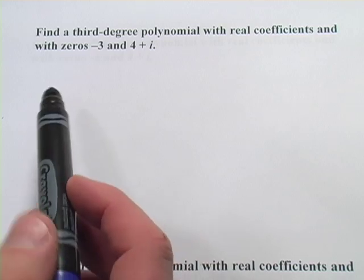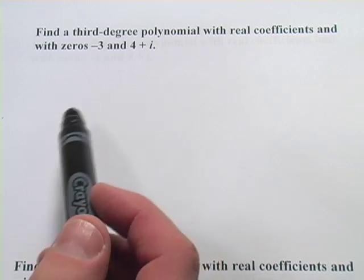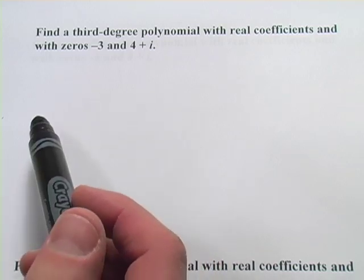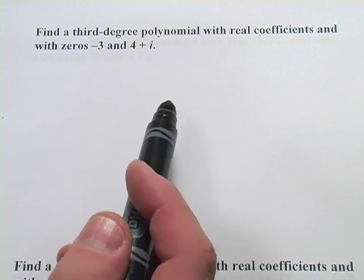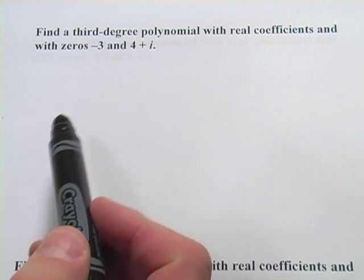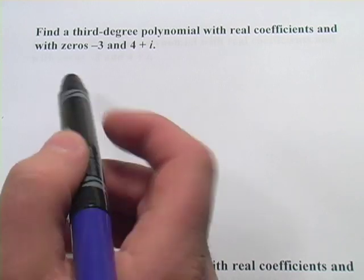In these problems, we're being given some zeros and we're being asked to reconstruct the polynomial that they came from. There are a couple of tricks in how to do this.